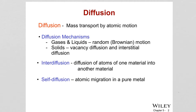Diffusion is defined by mass transport by atomic motion. The mechanism of diffusion in gases and liquids is just random motion. In solids, there is vacancy diffusion and interstitial diffusion.